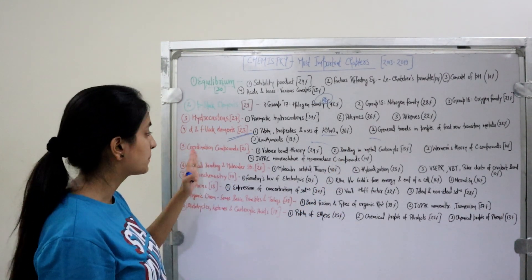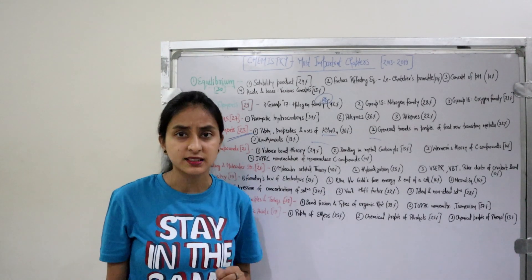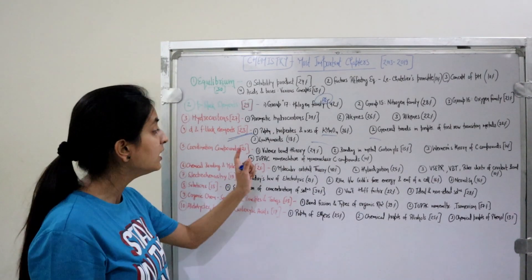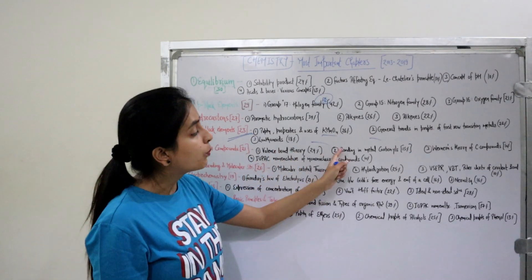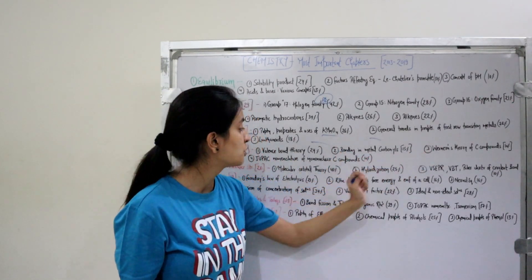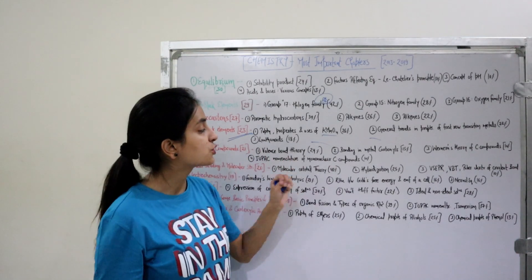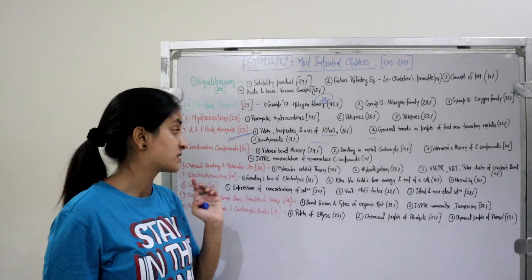Fifth most important chapter: Coordination Compounds. I think this chapter is quite easy, so let's prepare it. Topics include Valence Bond Theory (VBT), Bonding in Metal Carbonyls, Werner's Theory of Coordination Compounds, and IUPAC Nomenclature of Mononuclear Coordination Compounds.